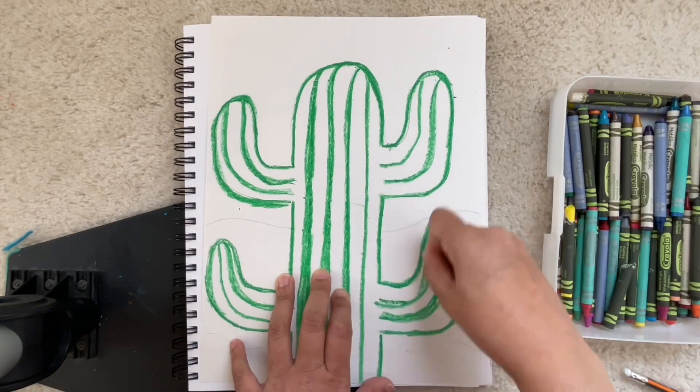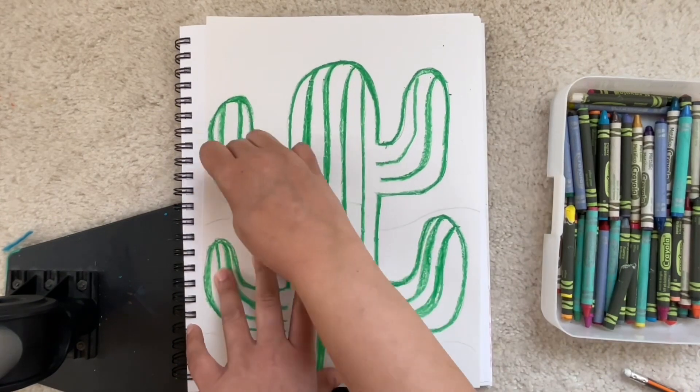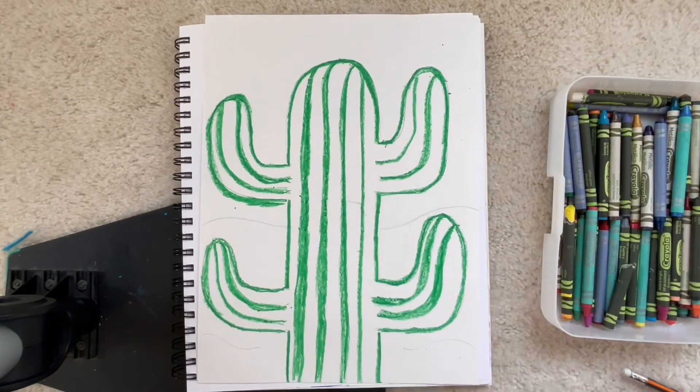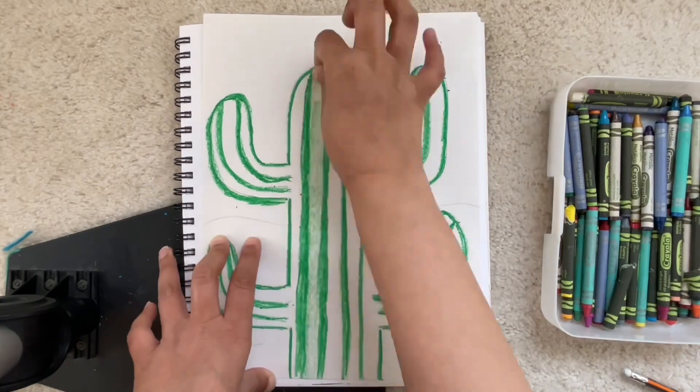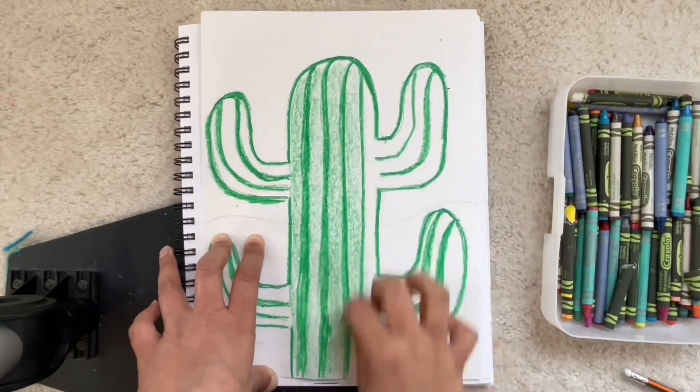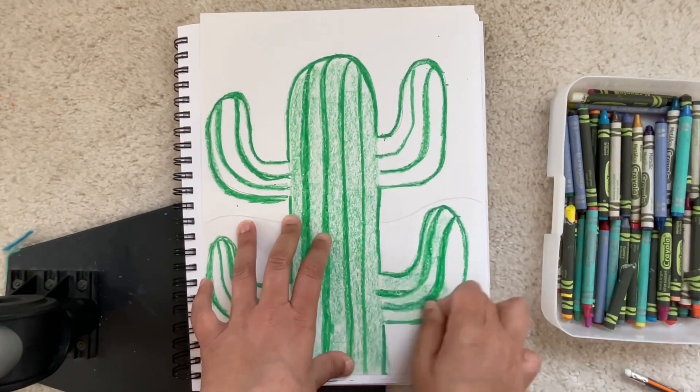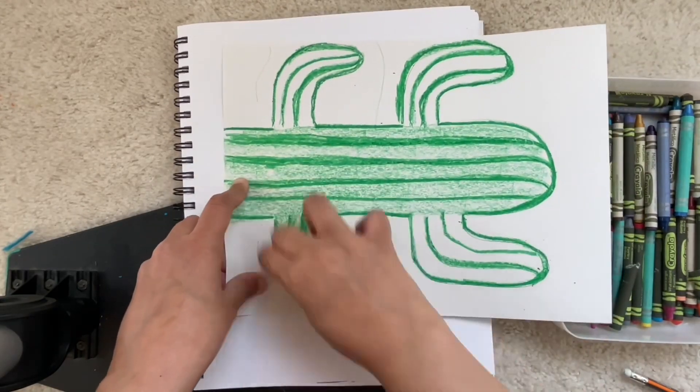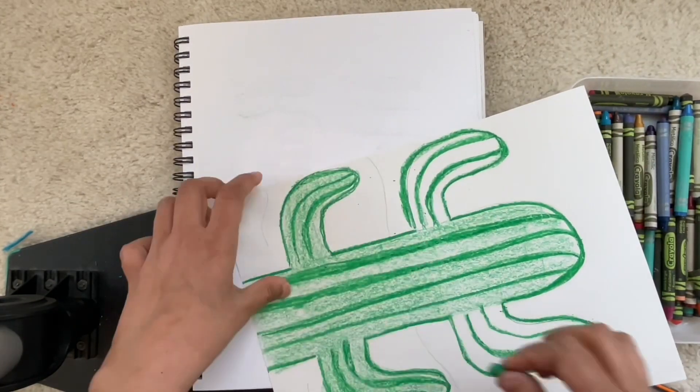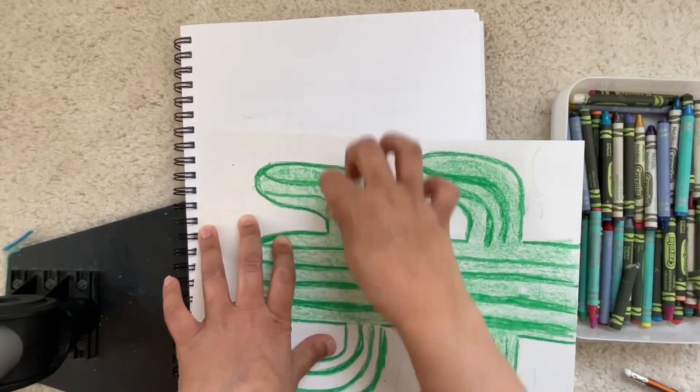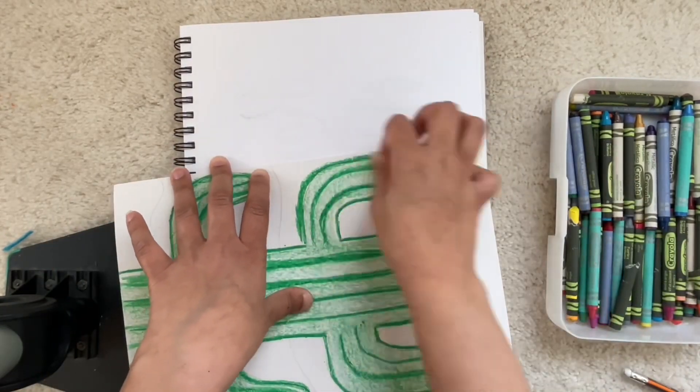Then you can take your crayon and lay it flat to color. So I laid it flat and I'm just going up and down and it helps me cover more surface. I am turning my paper which helps me color in the direction that the sides of the cactus are going.